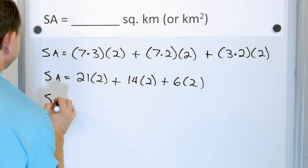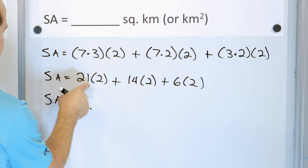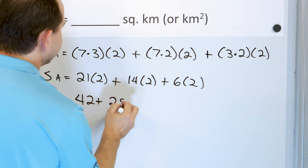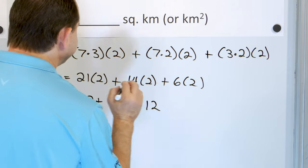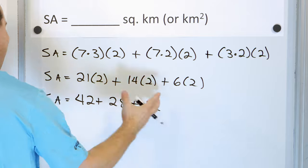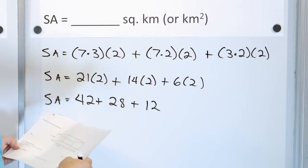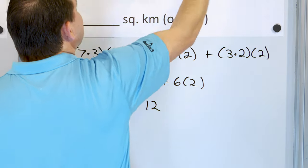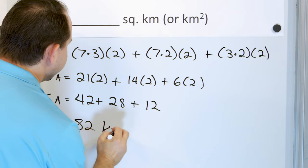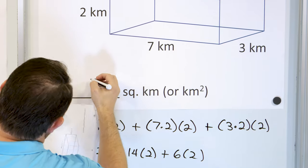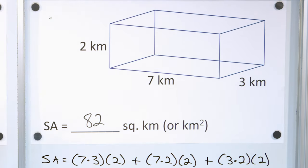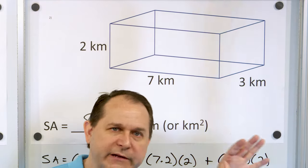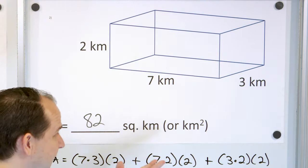Now carrying out the multiplication: 7×3 = 21, times two is 42. Then 7×2 = 14, times two is 28. Then 3×2 = 6, times two is 12. Adding them up: 42 + 28 + 12 = 82. The unit is square kilometers, so the answer is 82 square kilometers. I check my notes because I make mistakes too — I'm doing the work but just double-checking.